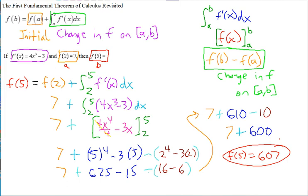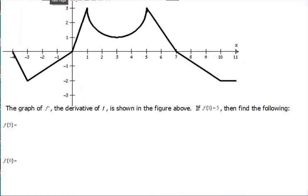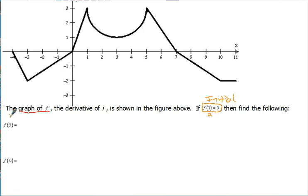That's how you set it up with an equation. Now let's look at what happens when instead of the equation of the derivative, you're given the graph of the derivative. It says the graph of f' is shown in the figure, and they give you f of 1 — that's one point on the original function. So that's our initial, making 1 our A value, and we're trying to find f of 5, which is our B.